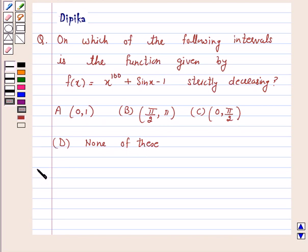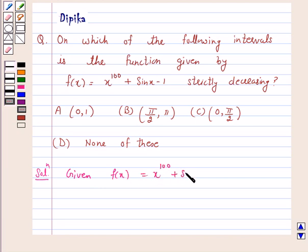Let's start the solution. We have f(x) = x raised to power 100 plus sin x minus 1. Therefore, f'(x) is equal to 100x raised to power 99 plus cos x.